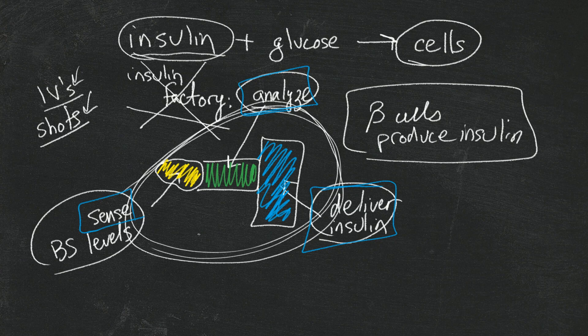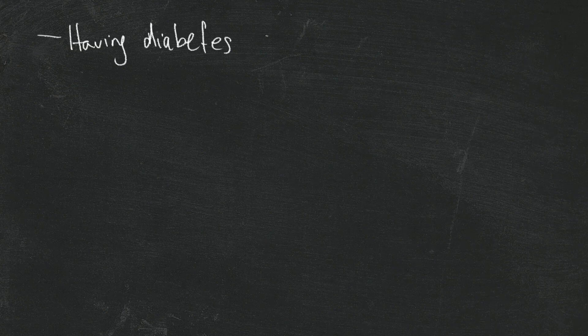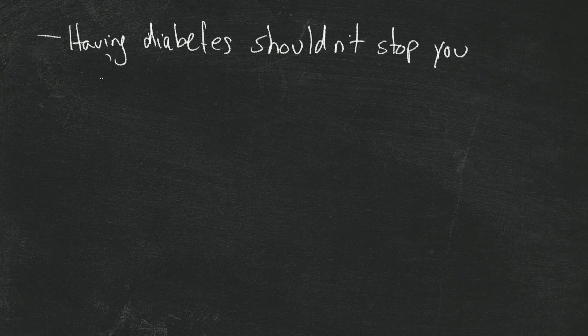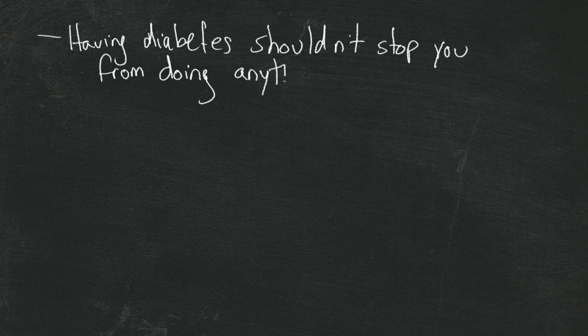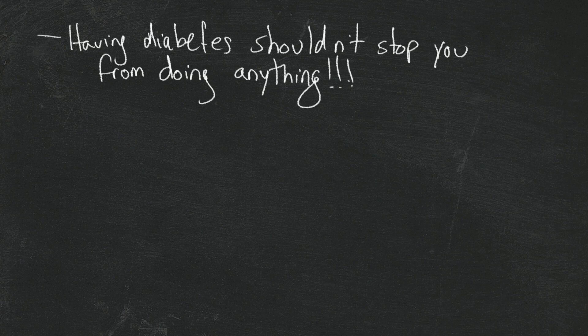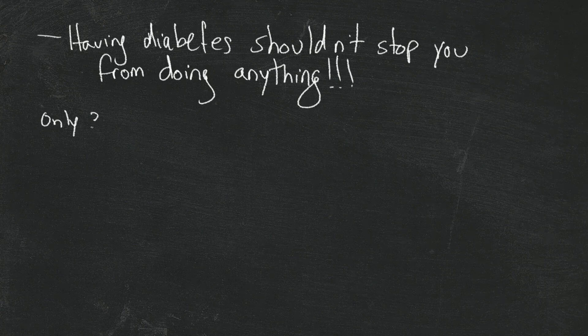Now that we have an idea about what we need to do, let's talk about what things are going to look like in your future as you manage diabetes. The most important thing to realize is that having diabetes shouldn't stop you from doing anything. If you want to climb Mount Everest, you can — you just have to take your blood sugar meter, insulin, and carbs with you. If you want to be a Supreme Court justice, you can.